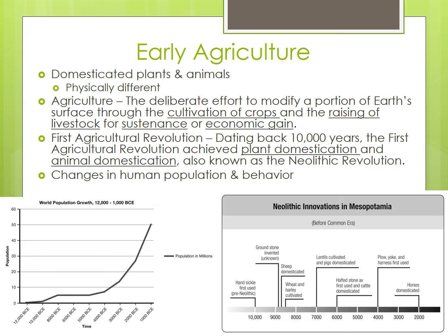As humans shifted to agriculture, other changes began to occur. While hunter-gatherers were small bands of nomadic people dispersed over the landscape, early agriculturalists came to be settled in more densely populated, sedentary farming communities that were usually along rivers. These permanent communities led to the emergence of urban societies, which eventually became the first civilizations.